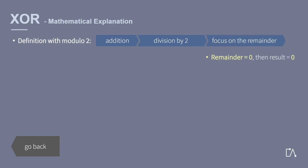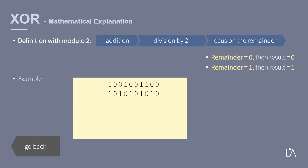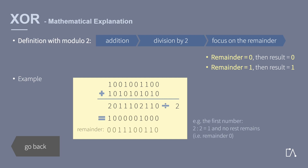Remainder zero means that the result is also zero. Remainder one means the result equals one. We will illustrate this with an example. First of all, we add the bits up in the way we are used to. The result, which consists of zeros, ones, and twos, is now divided by two. We are only interested in the remainder of the division, which is our actual result.